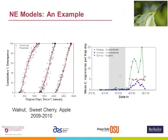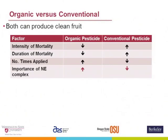These pesticide effects have led us to examine conventional versus organic systems. Both can produce really high-quality, clean fruit, but there's a completely different way that mortality is applied using different insecticides. For organic insecticides, the intensity of mortality is very low, it only lasts a short period, and you apply more frequently — but as Nick mentioned, the natural enemy complex has to be larger and more important to get clean fruit. Conventional is exactly the opposite; natural enemies will help, but that's not the primary way they feel they're controlling pests.